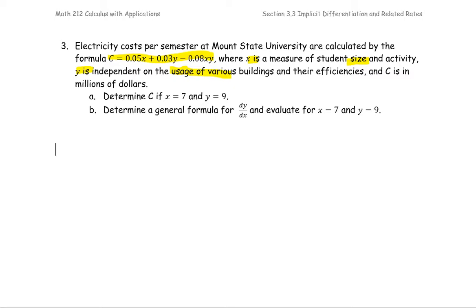In part A, we're going to determine the cost C if X equals 7 and Y equals 9. In part B, we're going to determine the general formula for dy/dx and evaluate it for X equals 7 and Y equals 9. Let's get started.